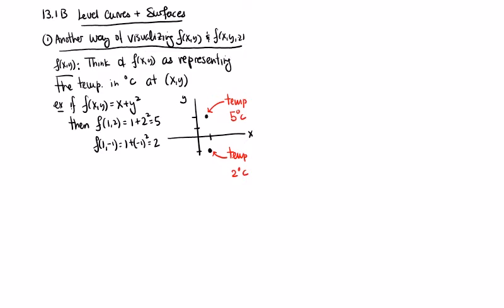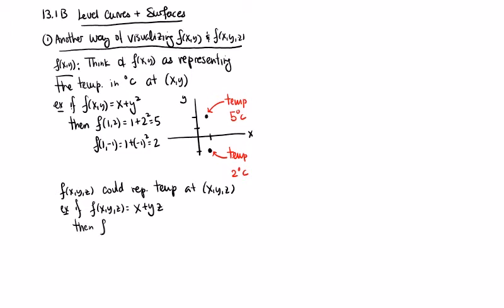One advantage of this approach is that it works for functions of three variables as well. For a function f(x,y,z), we didn't talk about sketching those because to sketch the graph of a function in three variables you need a four-dimensional space. But this could still represent the temperature at a point in three-dimensional space. For example, if f(x,y,z) = x + yz, then f(1,2,3) = 1 + 2×3 = 7, so at (1,2,3) it's 7 degrees Celsius - or Fahrenheit, or Kelvin. It's a different way of thinking about it.